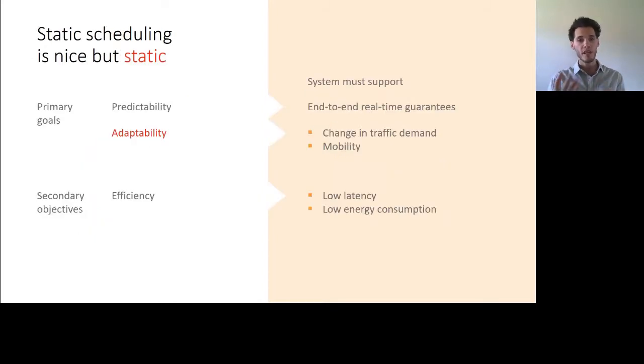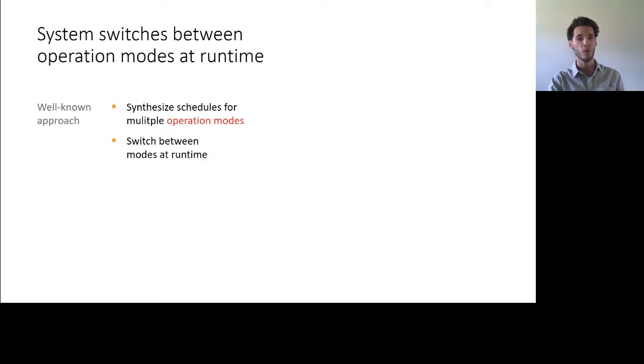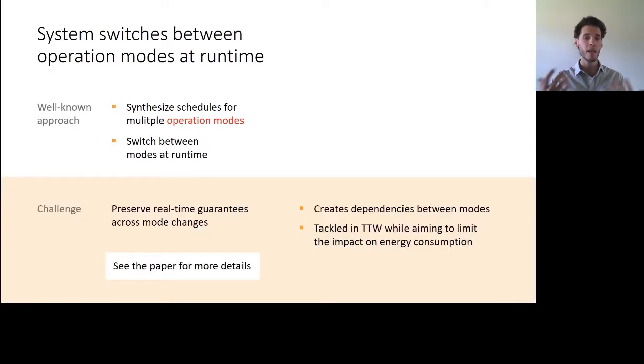The static schedule provides nice properties, but it is inherently static. We have static scheduling tables. So it's not great from an adaptability point of view with respect to changes in traffic demands. In the literature, this limitation is typically handled by adding the support for multiple operation modes. A mode can be thought of as a set of applications that are supposed to run concurrently. So we embed also this aspect in TTW, letting the system switch between modes at runtime. One specific complexity here is that because we want to have persistent applications, that creates dependencies between the schedule of the different modes that need to be handled slightly carefully. But we found ways of doing this in a reasonable fashion.